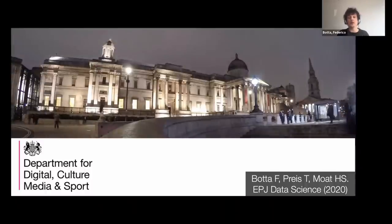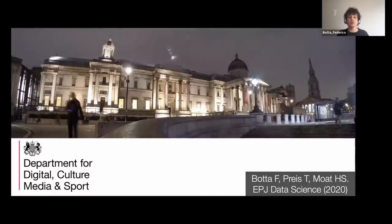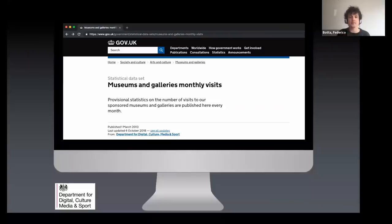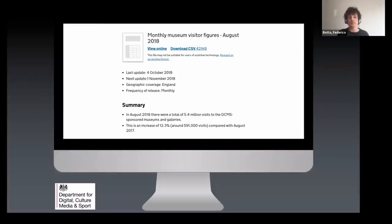We worked in collaboration with the Department for Digital, Culture, Media and Sport — DCMS — to help them better understand the performance of UK museums and galleries. Many of these are sponsored by DCMS, meaning they are free to access, which poses challenges for monitoring visitor numbers since there are no tickets. Each museum collects data differently, which is then processed, aggregated, quality-assured, and released by DCMS with a delay of one month.